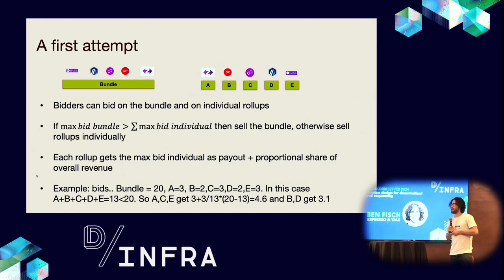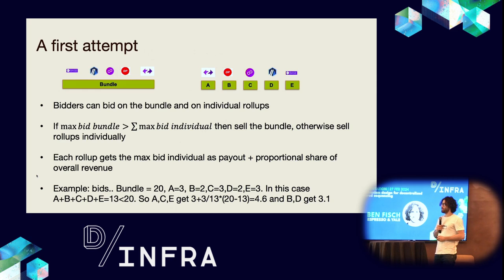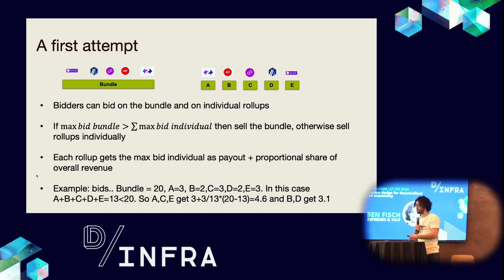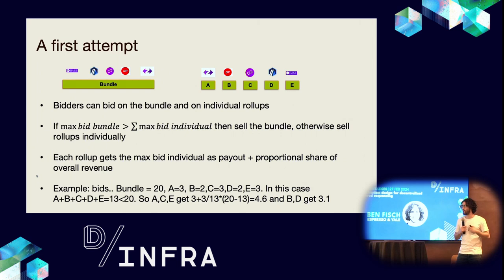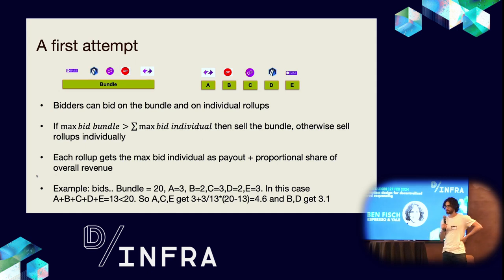A first attempt: allow bidders to bid on the bundle of all rollups and additionally on each individual rollup. If the maximum bid on the bundle is greater than the sum of bids on individuals, we sell the bundle; otherwise we sell rollups individually. Each rollup gets the max bid of the individual as payout plus a proportional share of the overall revenue. For example, with a bundle bid of 20 and individual bids on A, B, C, D, and E of 3, 2, 3, 2, and 3 respectively, the sum of individual bids is only 13, which is less than 20.